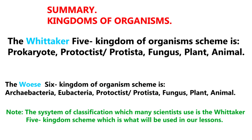We have already discussed prokaryotes. We are now going to look at eukaryotes. Under eukaryotes, using the Whittaker five-kingdom scheme, we are going to look at Protoctist, Fungi, Plants, and Animals. Today we want to look at the Protoctist kingdom — what are the organisms that have been put into it?